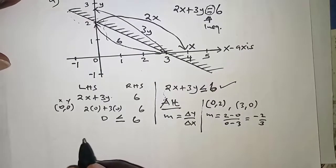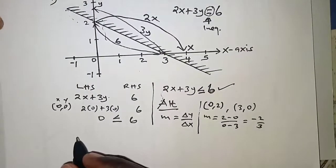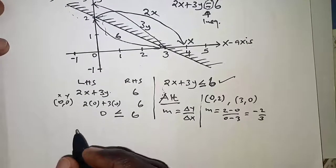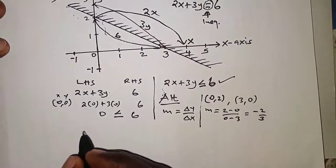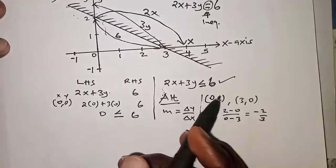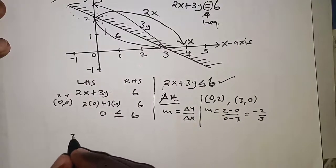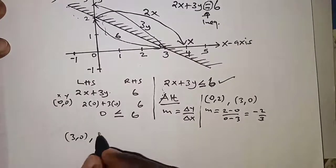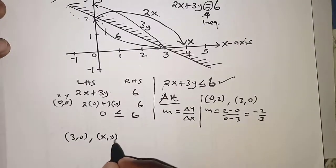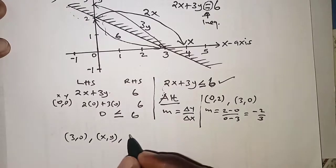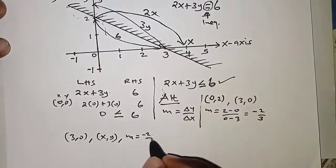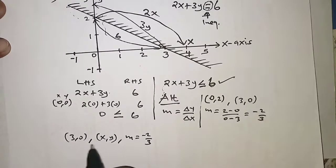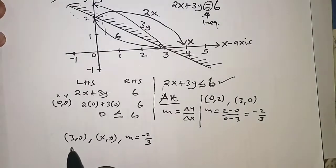With the gradient, the next thing is we can now have one of the points. You can decide on this or that, so let me pick (3,0) and an arbitrary point (x,y) plus the gradient which we found to be negative 2/3. The equation of the line becomes: (y - 0)/(x - 3) should be negative 2/3, and then now we cross multiply.